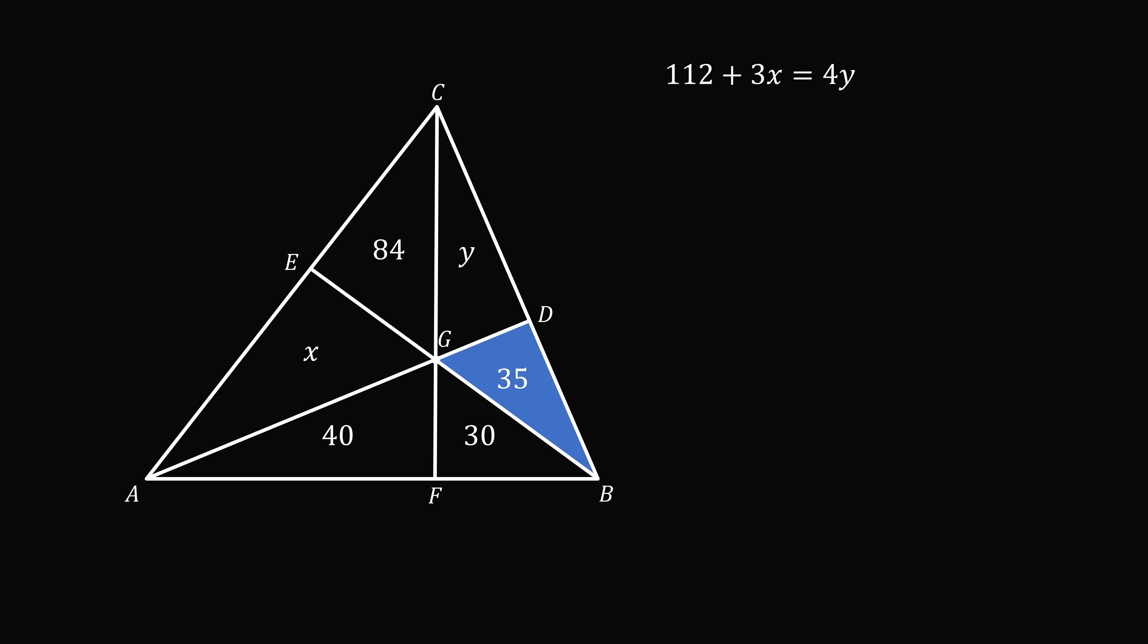Consider the triangle BDG. It has an area of 35. We could construct the height from G to the base BD. We would also do the same thing for the triangle CDG. We know its area is equal to y. We construct the same height from G to the base CD. And we know that its area will be one half times CD times the height. So we can take the ratio of areas of these two triangles. And we know that 35 over y equals the ratio of the bases of these triangles, BD over CD.